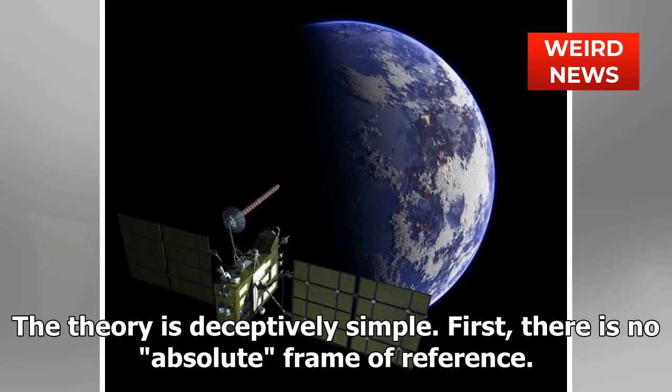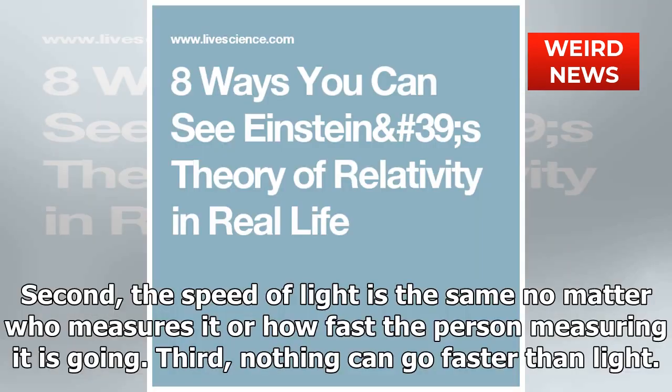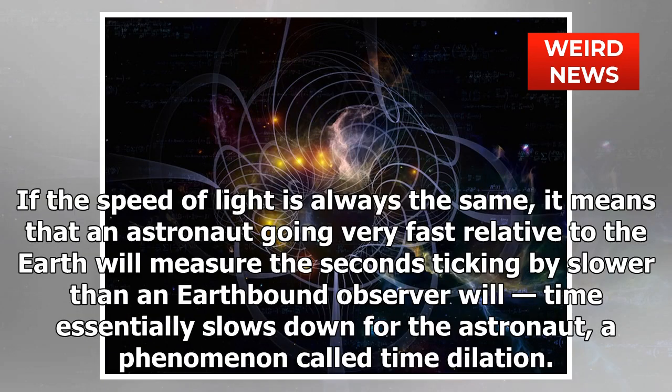The theory is deceptively simple. First, there is no absolute frame of reference — every time you measure an object's velocity, momentum, or how it experiences time, it's always in relation to something else. Second, the speed of light is the same no matter who measures it or how fast the person measuring it is going. Third, nothing can go faster than light.